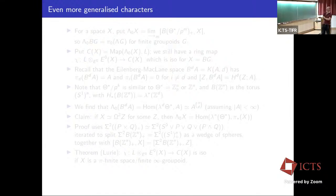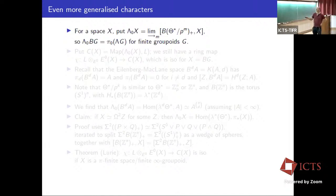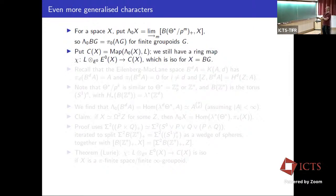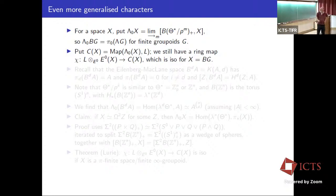Now we generalize the character theory further. For a space X, define λ_0(X) to be the colimit of homotopy classes of maps from the classifying space of θ*/p^k into X. When X = BG, this is easy to identify with the set of isomorphism classes in λG. So we define a character ring C(X) = maps from λ_0(X) to L, and we still have a character map χ: L ⊗_{E^0} E^0(X) → C(X). This is an isomorphism when X is a classifying space of a finite group.